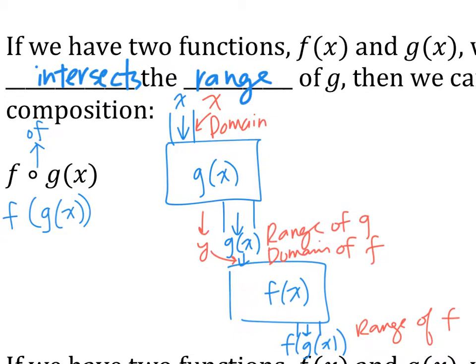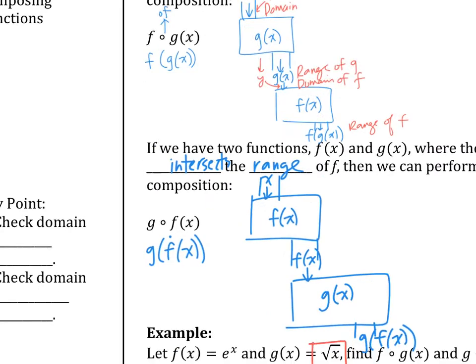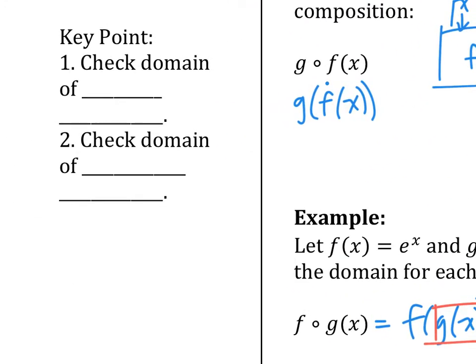Now what's going to happen is g of x creates a y value, and that y value goes into f of x. That y value — we don't really care, because if it can go in, the y value is always going to be okay. Now what we're going to do is care about the final product as well, f of g of x — whatever makes the final one break is also going to be a problem. So here's what we're going to do: check the domain of the inside function, because it cannot break your first function. Second, you check the domain of the composed function — meaning after you put them together, it has to also work there.